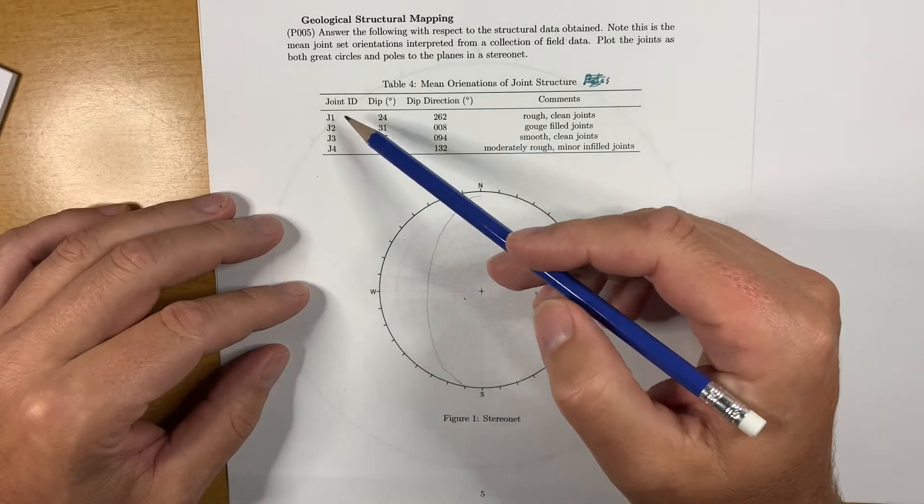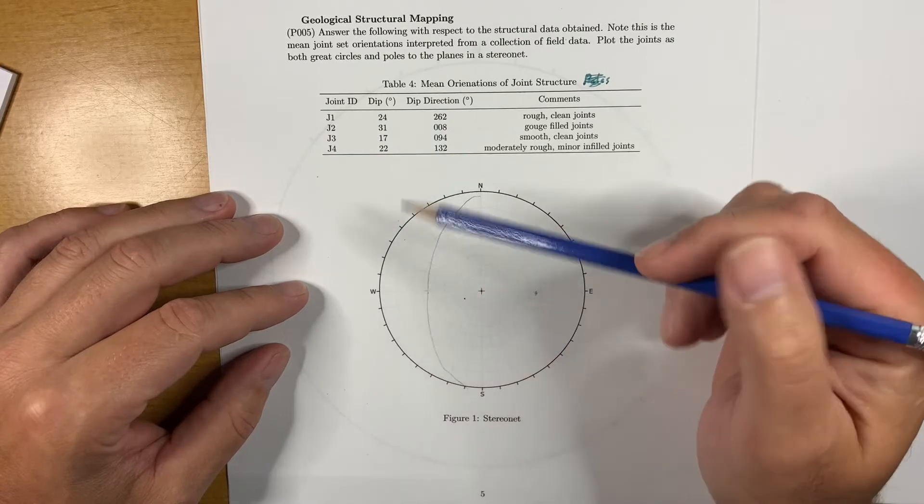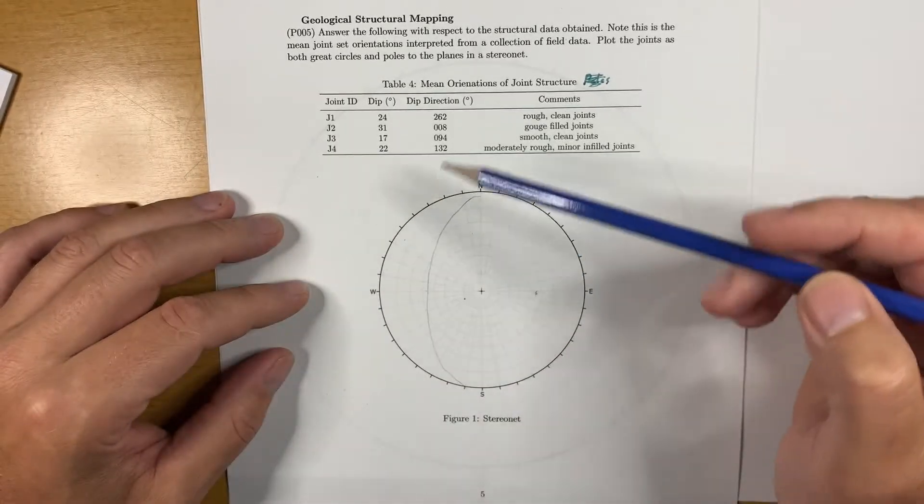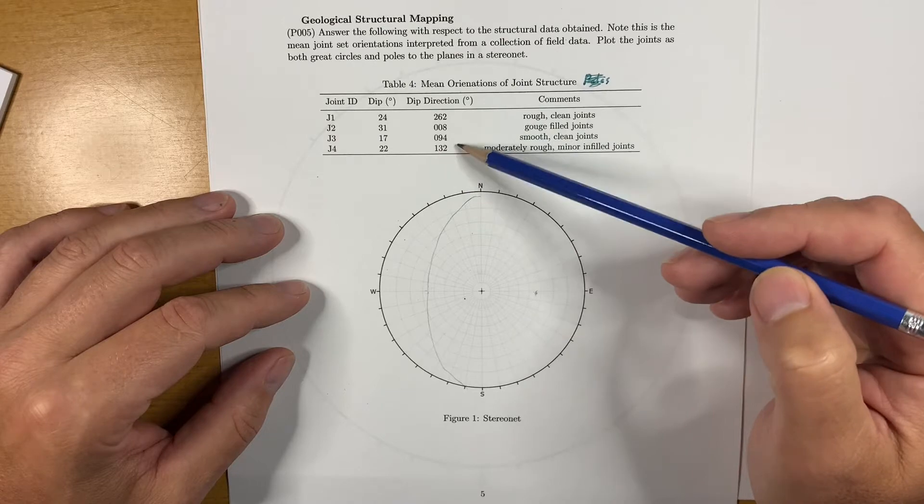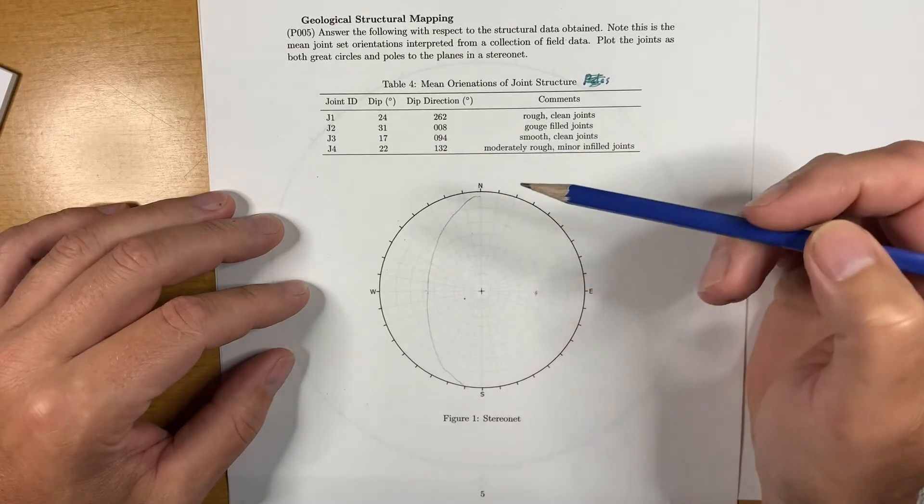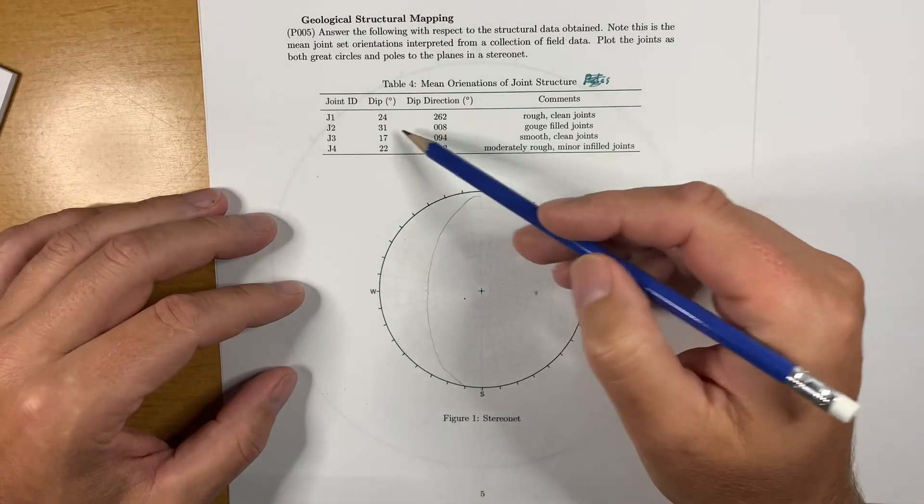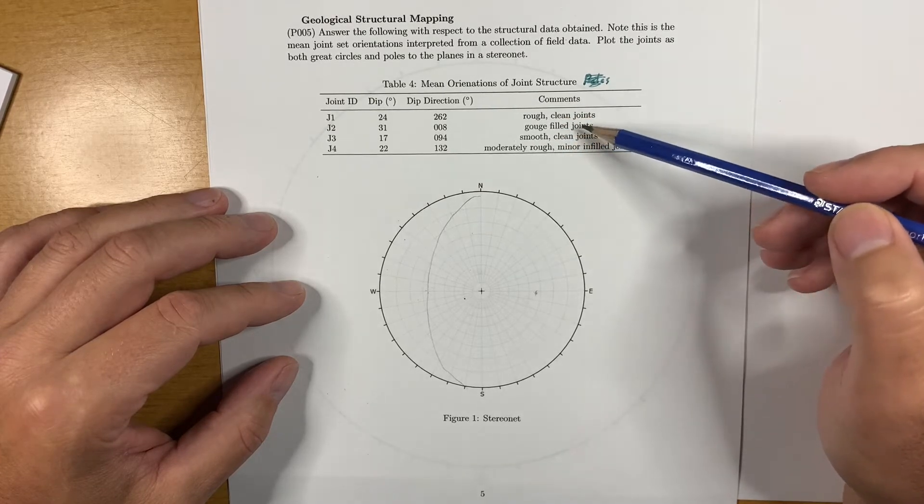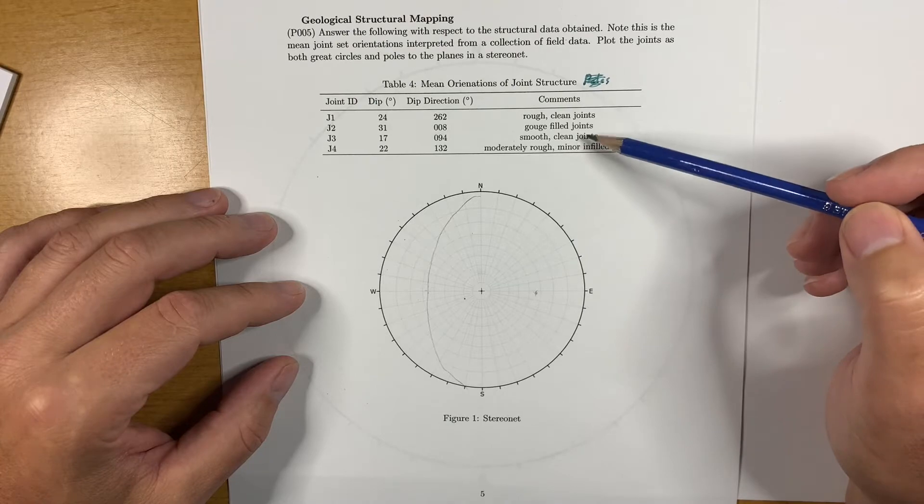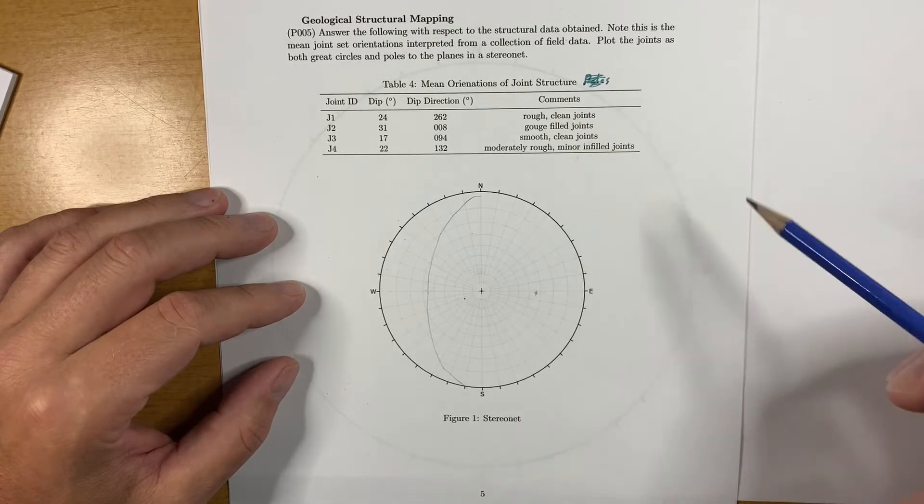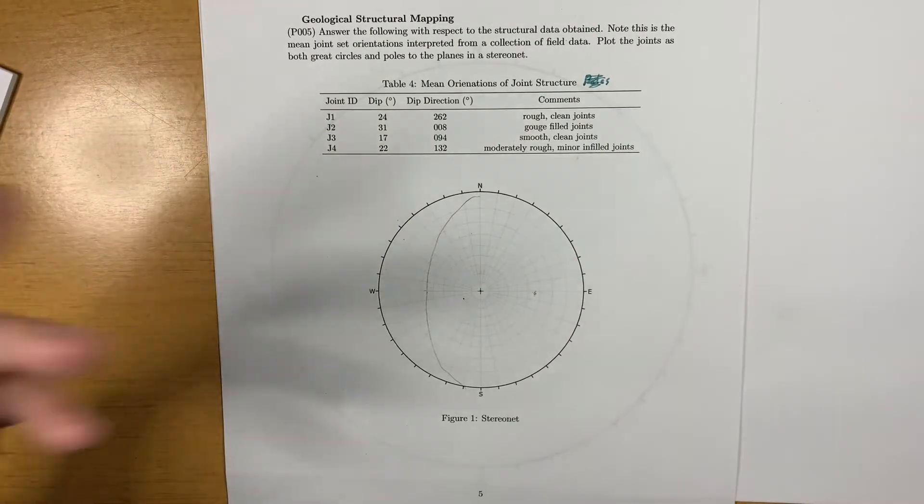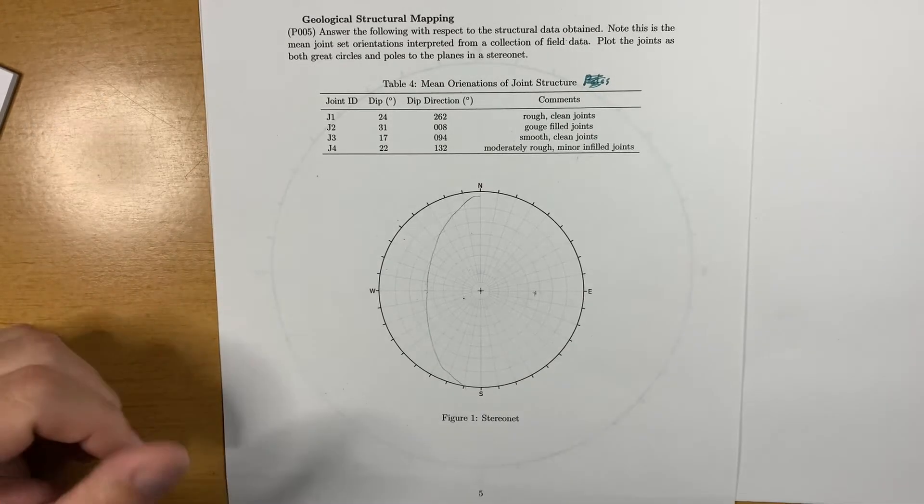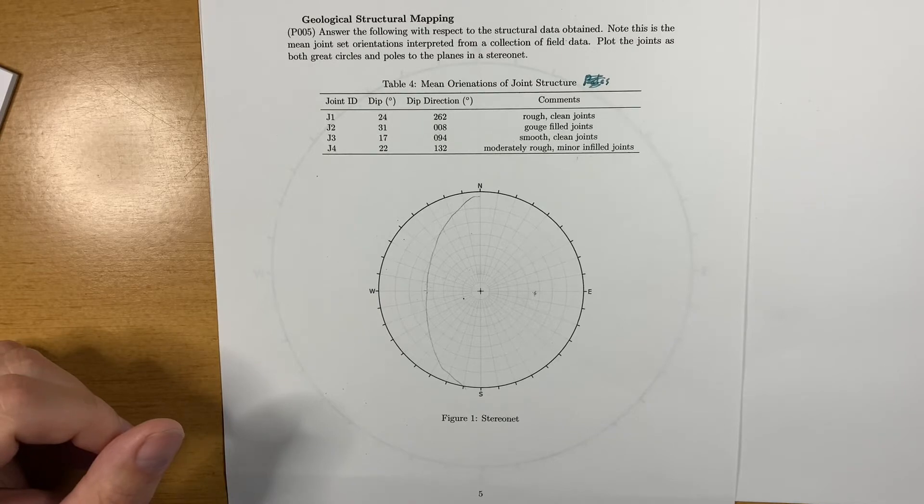What do we have here? We have four joint sets, J1, J2, J3, and J4. We have some dip angles, the dip below the horizon, and we have some dip directions, which are compass angles. They're always reported with three digits so that you don't get them confused with the dip. And then we have some comments: rough clean joints, gouge filled joints, smooth clean joints, moderately rough with minor infill joints. You could have other structures as well, like faults, schistosity, bedding planes.